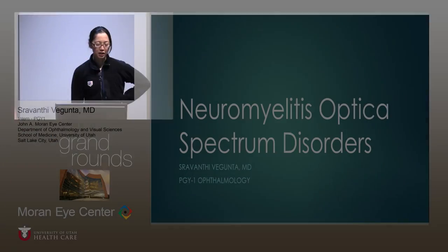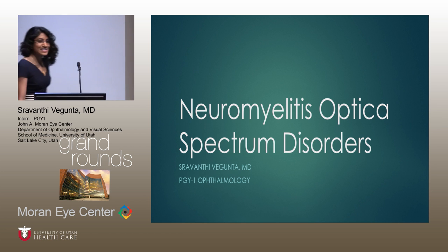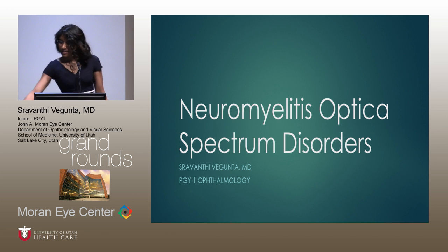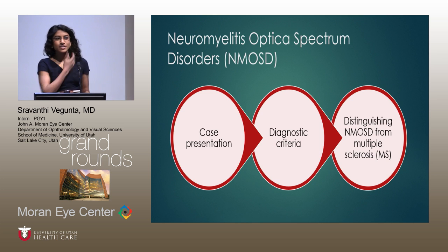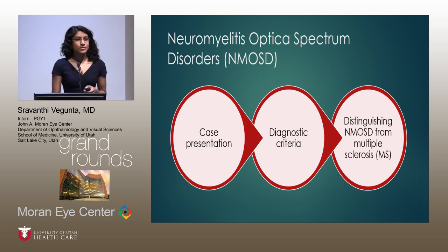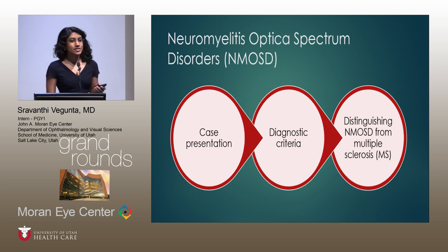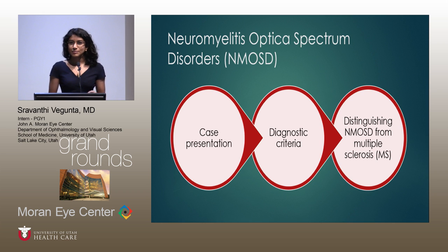Today she's speaking about neuromyelitis optica spectrum disorders. Thanks, Eileen. Good morning everyone. Today I'm going to start off with a case presentation, then talk about the diagnostic criteria for neuromyelitis optica spectrum disorders, or NMO spectrum disorders. The most important thing I'll discuss is how to distinguish between NMO spectrum disorders and other demyelinating diseases, especially multiple sclerosis, since the two diseases seem to present similarly but have very distinct pathophysiological mechanisms, and the chronic treatment is different.